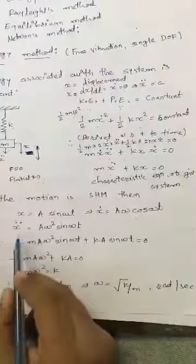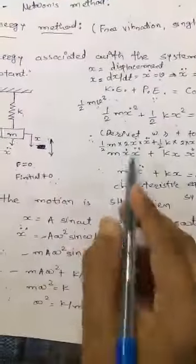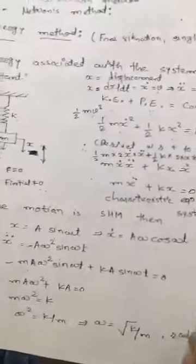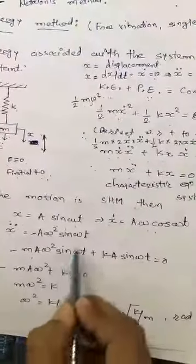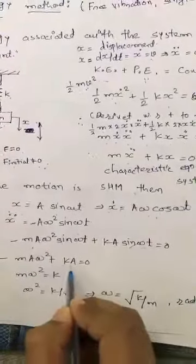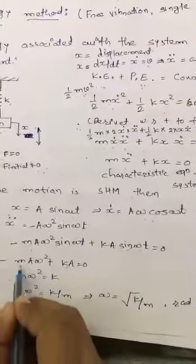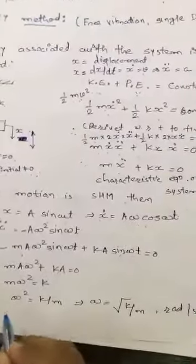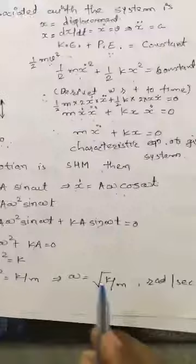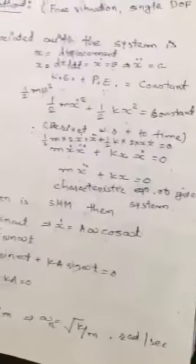Substituting x-double-dot and x into the characteristic equation: negative A ω squared sine(ωt) times m plus k A sine(ωt) equals zero. Since sine(ωt) is common it can be canceled. Then A is also common and cancels, leaving minus m ω squared plus k equals zero, giving m ω squared equals k, so ω squared equals k/m, and ω equals the square root of k/m. This is the natural frequency of the vibrating body.